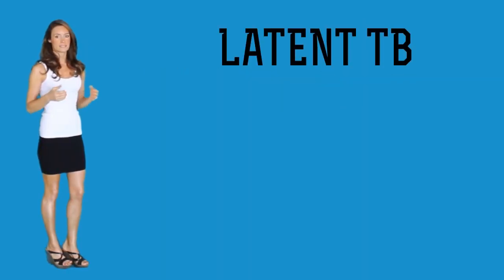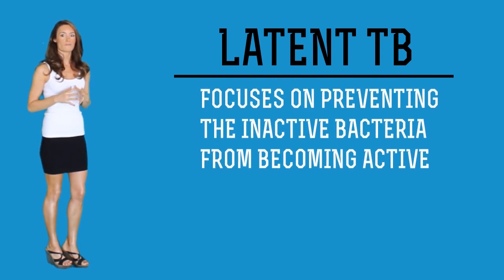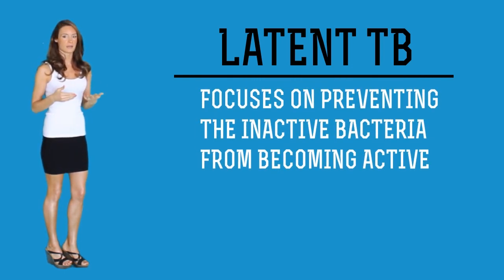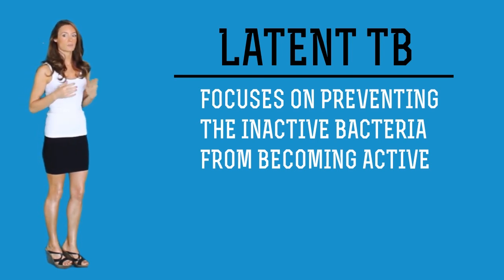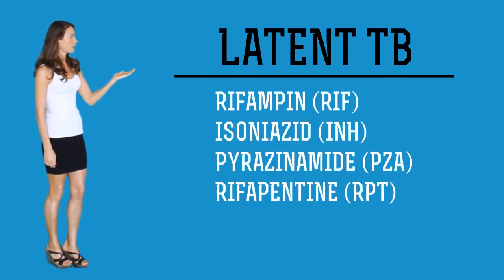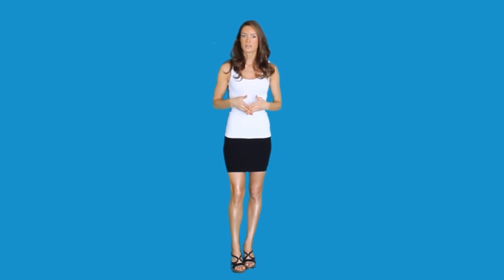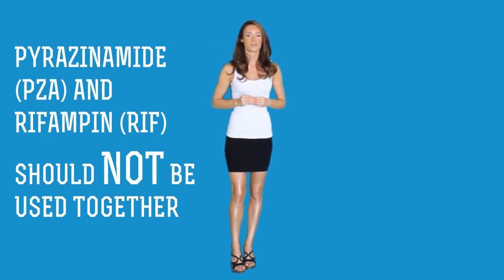Treatment for latent TB: in latent TB the bacteria is inactive, but certain conditions can cause it to become active and grow and multiply. The treatment of latent TB focuses on preventing the inactive bacteria from becoming active. Some approved medication regimens used to manage latent TB include rifampin, isoniazid, and pyrazinamide. Please note that the CDC has suggested that pyrazinamide and rifampin should not be used together, as several cases of serious liver injury and death have been reported due to the combined use of these drugs.